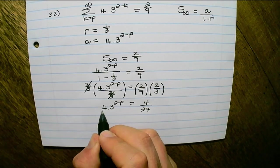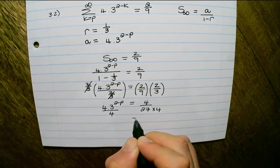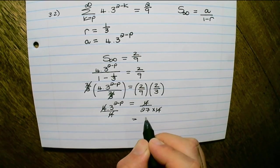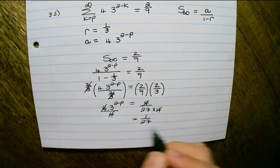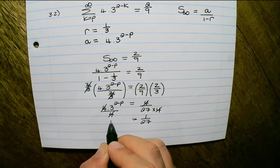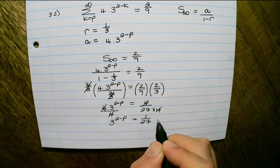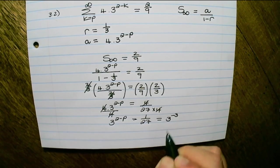Now I would divide both sides by 4 in order to simplify further. So the right hand side will equal 1 over 27, and the left hand side will equal 3 to the power of 2 minus p. But 1 over 27 is the same as saying 3 to the power of negative 3.